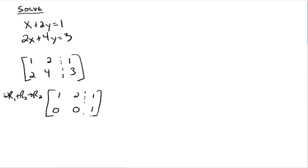Zero cannot equal one. So what does that mean in terms of the solution? That's right, there's no solution. So when you're using matrices, a row is going to drop out — you get a bunch of zeros — and you're left with a false statement. Zero does not equal one, so therefore no solution. If you were to graph both of these lines, they would be parallel. They would not intersect.